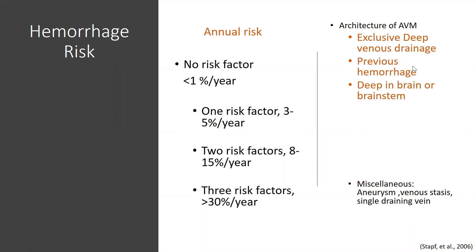The annual risk of any AVM rupturing when unruptured is about 1 percent per year, with a range of 2 to 4 percent — fairly low without dangerous risk factors. If you have one of these risk factors — deep venous drainage, previous hemorrhage, or a deep location — the risk is about 3 to 5 percent per year. Two risk factors brings it to about 15 percent per year, and three risk factors means almost a 30 percent chance of hemorrhaging.